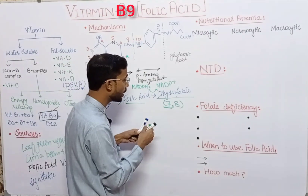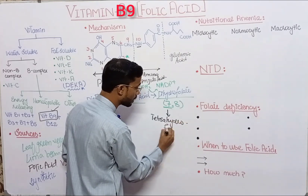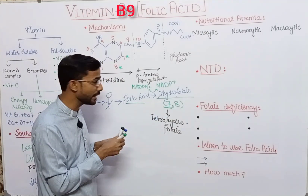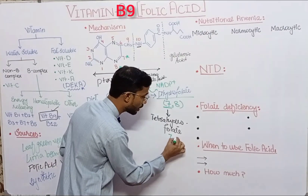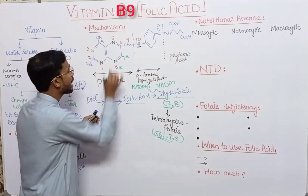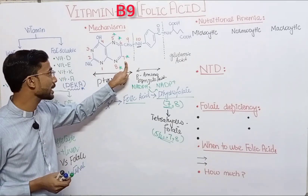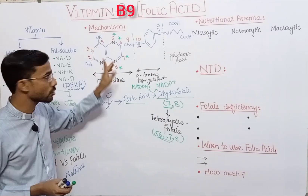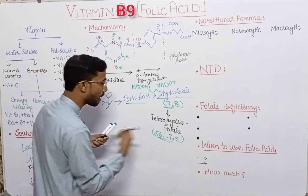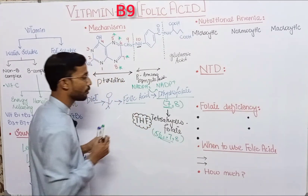Next, dihydrofolate converts into tetrahydrofolate. In that conversion, two more hydrogens are added at positions five and six. So a total of four hydrogens are added to folic acid — first at positions seven and eight, then at positions five and six — resulting in the formation of tetrahydrofolate. Tetra means four.